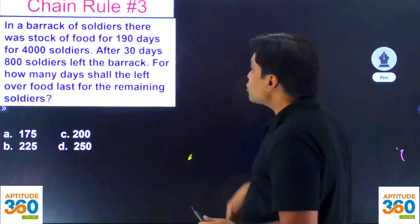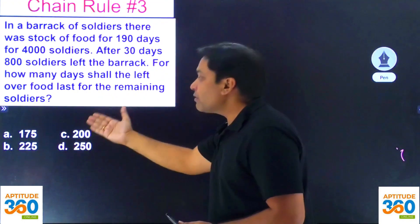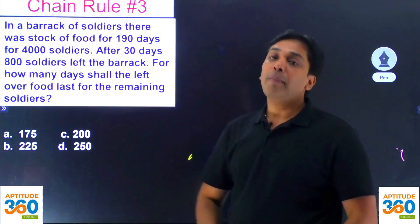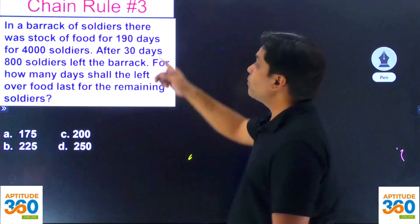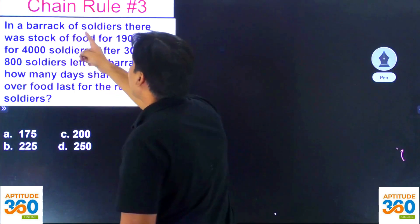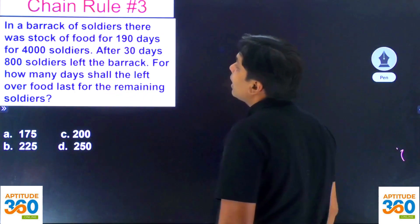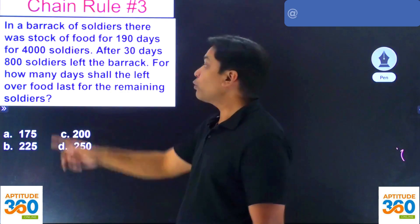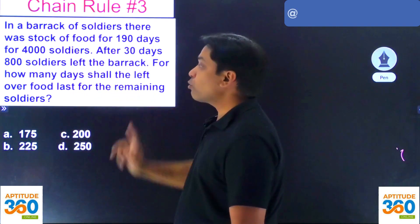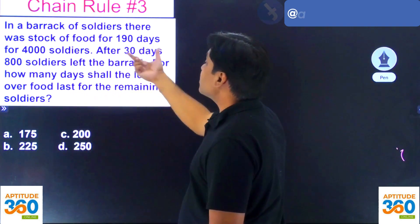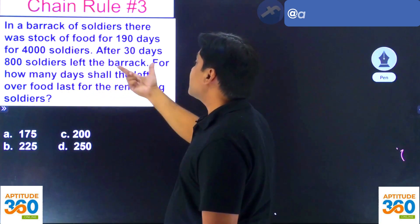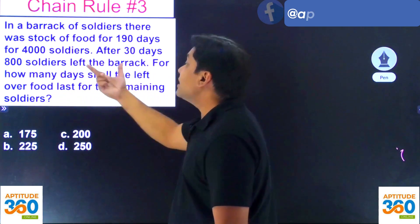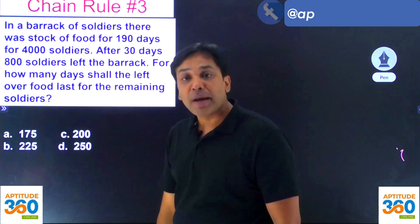I am going to solve this very first problem using either Chain Rule or Man Day's concept. The problem says that in a barrack of soldiers, there was stock of food for 190 days for 4000 soldiers. After 30 days, 800 soldiers left the barrack. For how many days shall the leftover food last for the remaining soldiers?